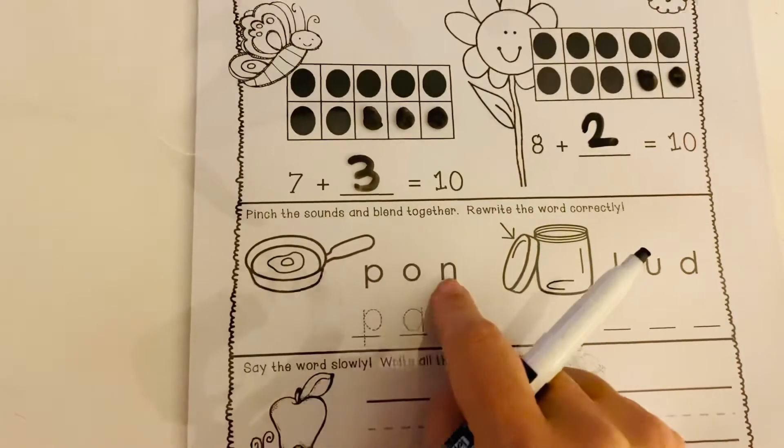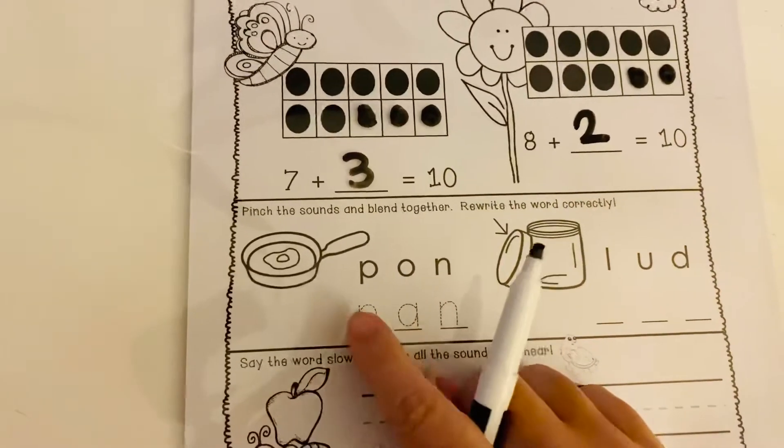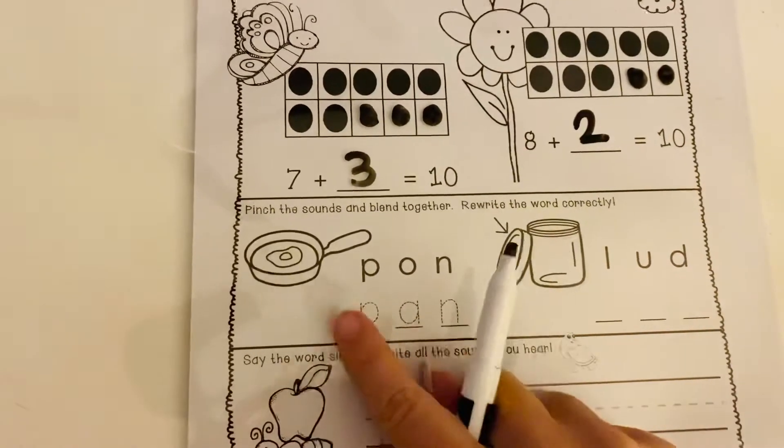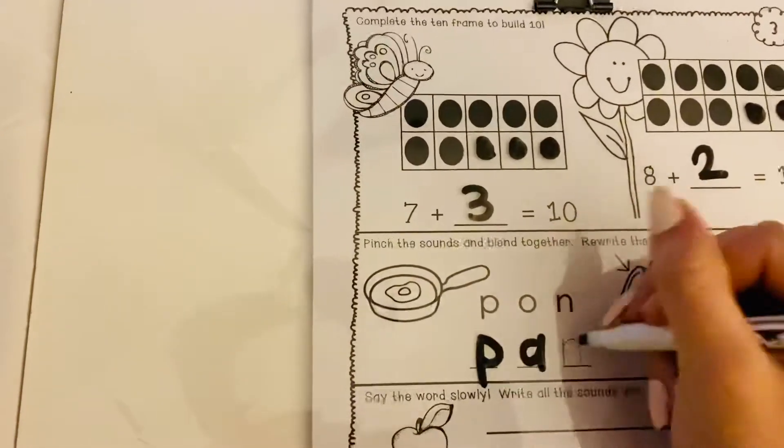So p-on looks like that middle sound instead of being ah, ah should be ah, ah, p-ah, n, pan, right? So that's the example that they gave us.